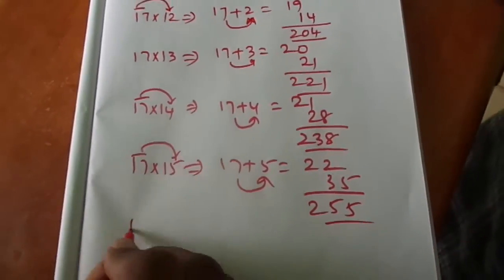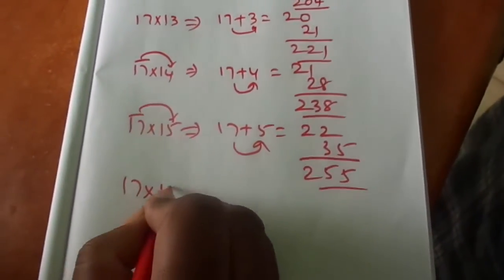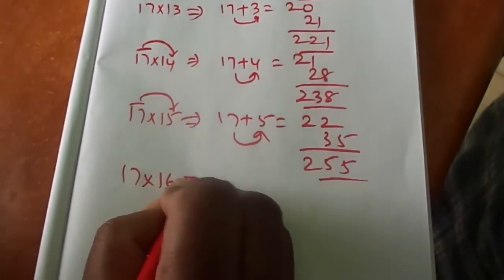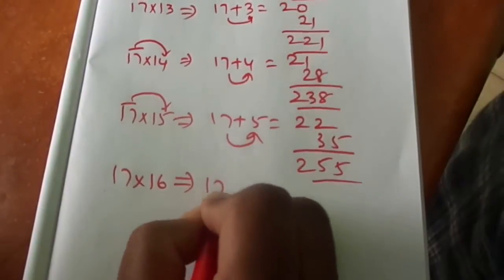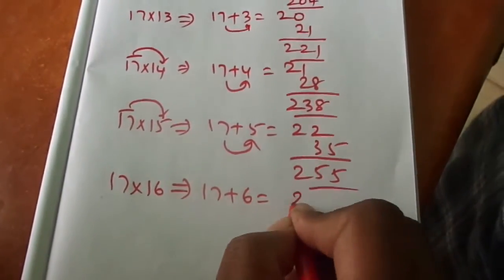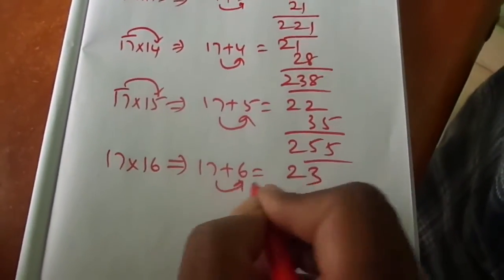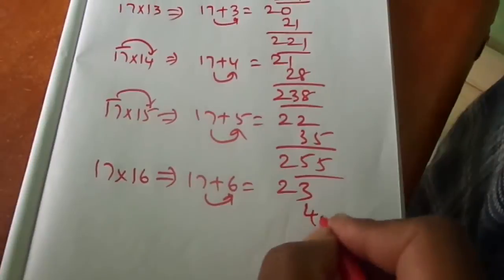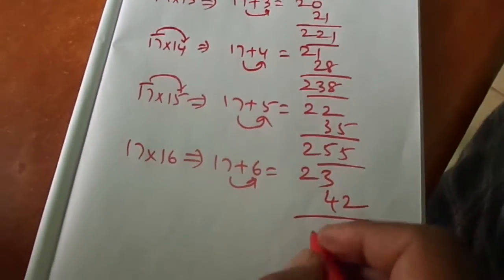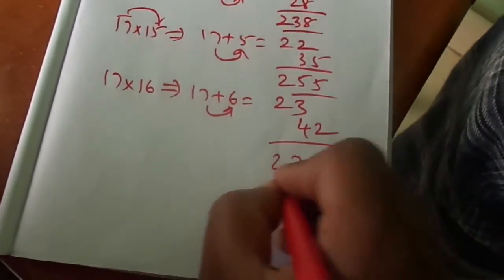17 16s: 17 plus 6 is 23. 7 sixes are 42. That is equal to 272.